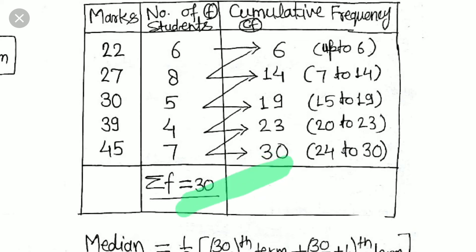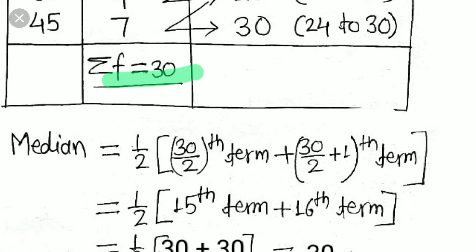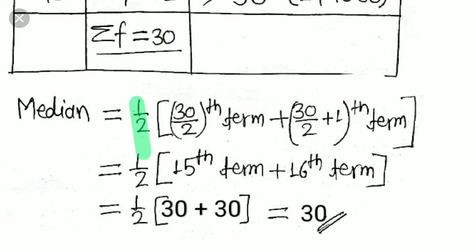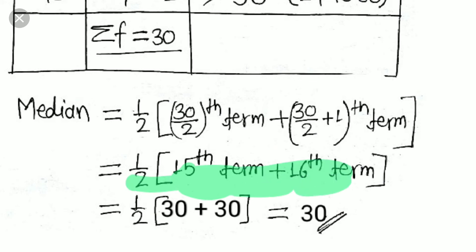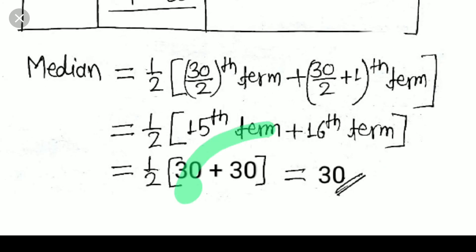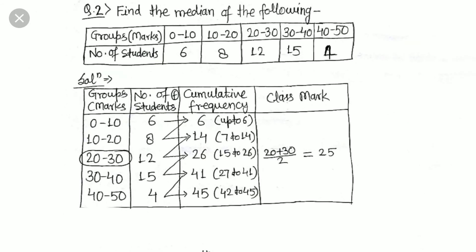Since the number of terms (30) is even, the median is the average of the 15th and 16th terms. Applying the formula: (30/2) th = 15th term and (30/2 + 1) = 16th term. From the cumulative frequency table, terms 15 to 19 all have the value 30, so the 15th term is 30 and the 16th term is 30. Therefore, median = (30 + 30) / 2 = 30.